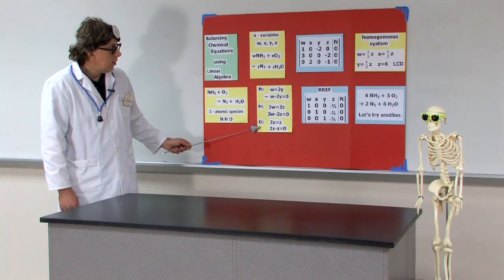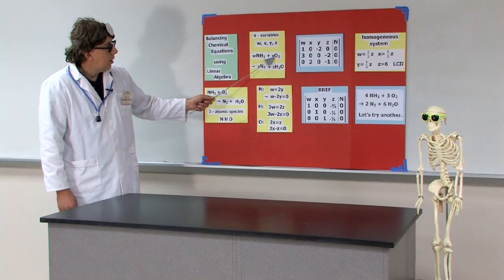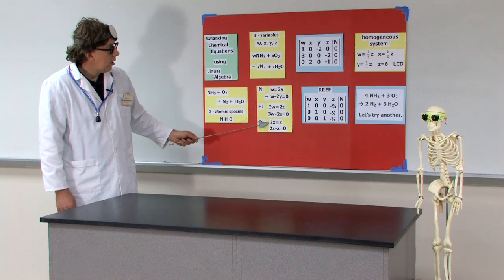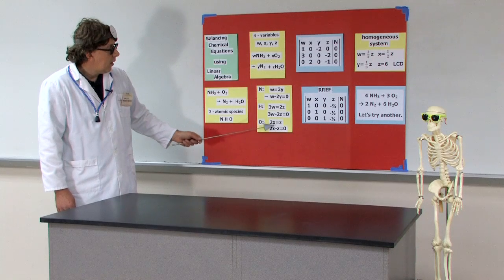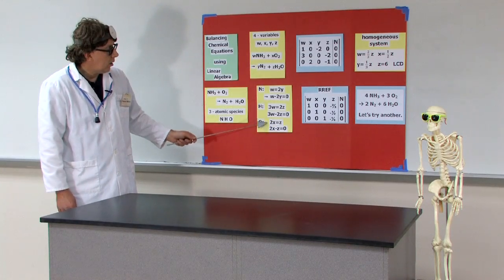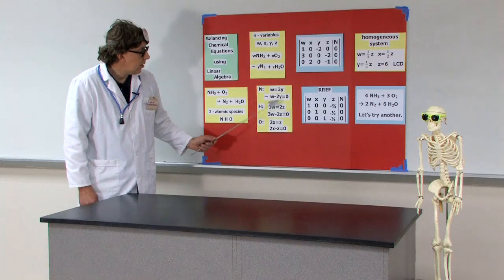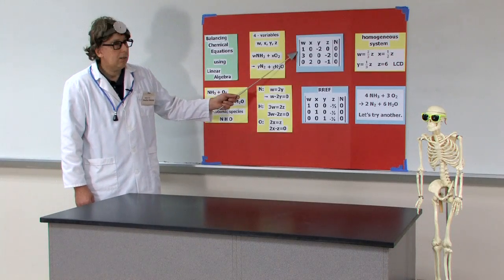And the final atomic species is oxygen. Going back, we see we've got X, 2X for oxygen. And we've got Z here, because we've got one oxygen in the water molecule. So 2X equals Z. Or 2X minus Z equals zero. So these are the equations we can put into the matrix.